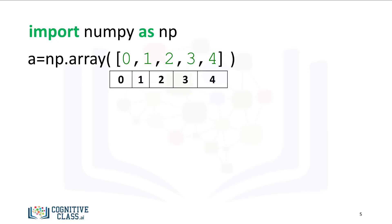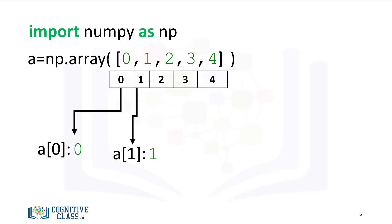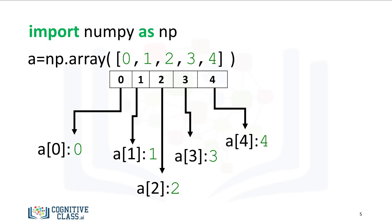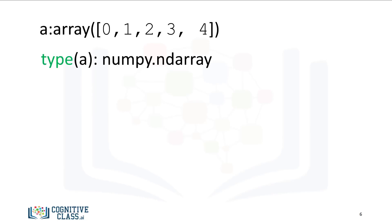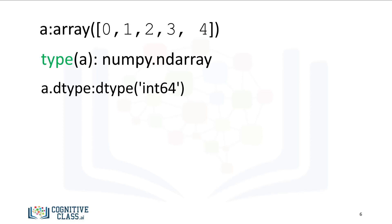We can access the data via an index. As with lists, we can access each element with an integer and a square bracket. If we check the type of the array, we get numpy.ndarray. As NumPy arrays contain data of the same type, we can use the attribute dtype to obtain the data type of the array's elements, in this case a 64-bit integer.